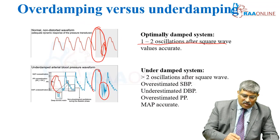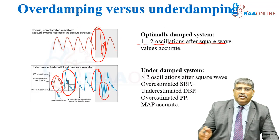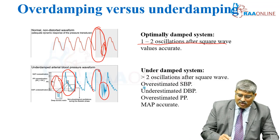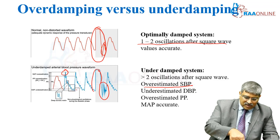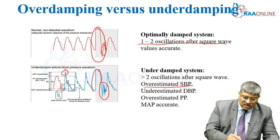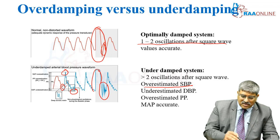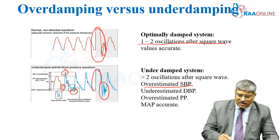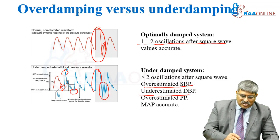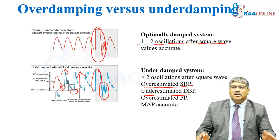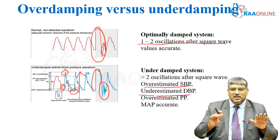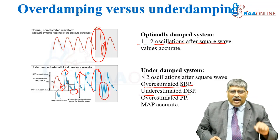Comparing a normal waveform to an under-damped waveform: in under-damping, the systolic blood pressure is overestimated. The diastolic pressure is underestimated because the systolic pressure is elevated. The pulse pressure is also overestimated. However, the mean arterial pressure remains the same. That is under-damping.